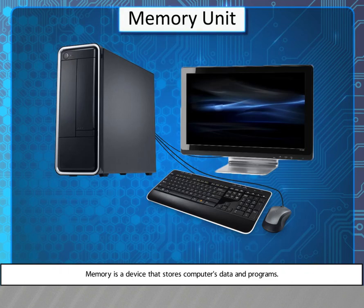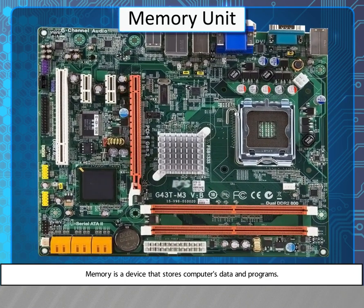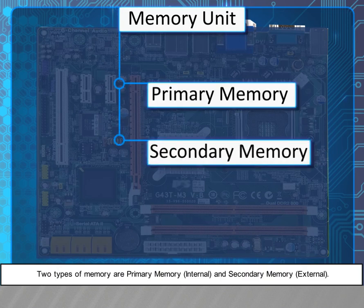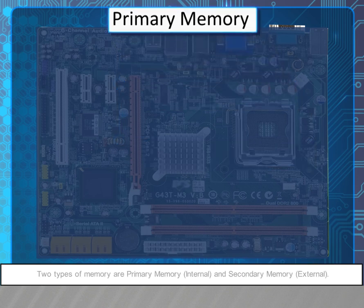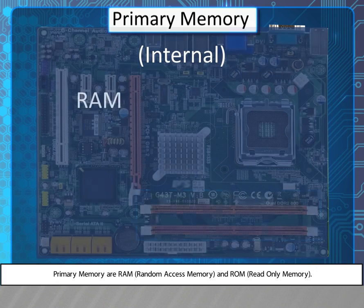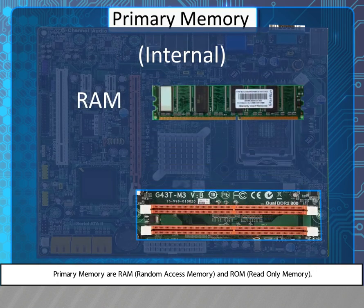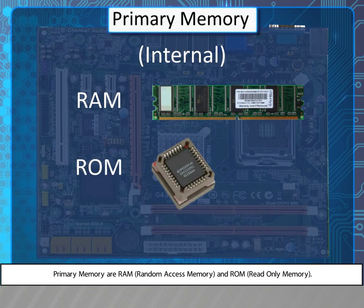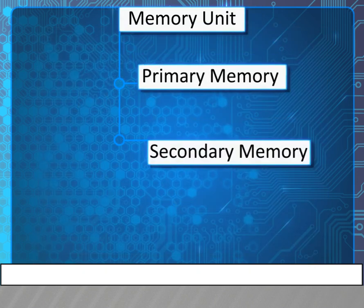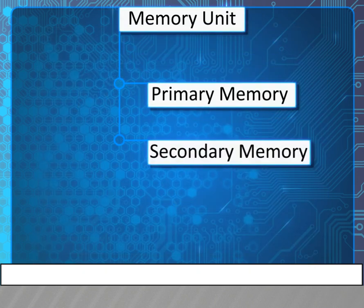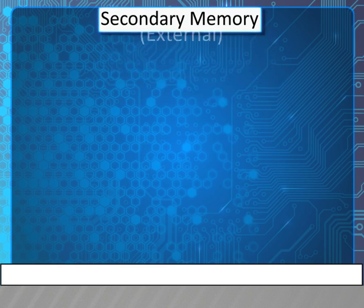Memory Unit. Memory is a device that stores a computer's data and programs. Two types of memory are primary memory, which is internal, and secondary memory, which is external.